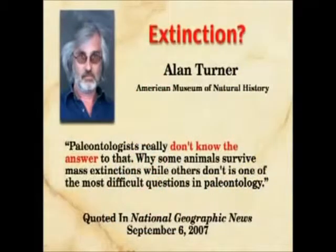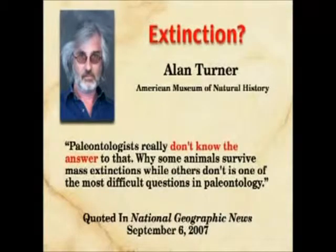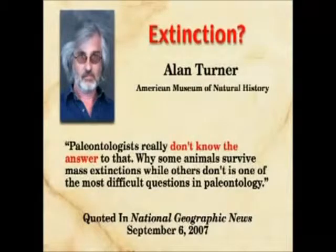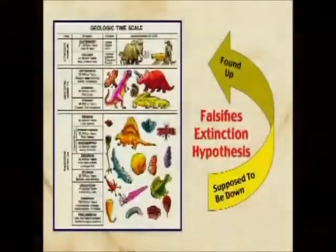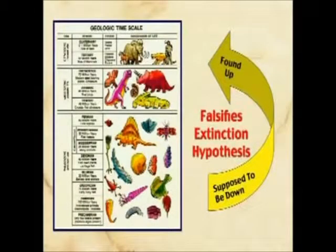Alan Turner refers to that, especially the implications regarding extinction — published just this September. Paleontologists really don't know the answer to that. This is pretty much up to date — September 6, 2007. Why some animals survive extinction and others don't is one of the most difficult questions in paleontology. Why you see something that's obviously extinct according to the column but swimming around — they don't know. It does falsify the idea that because you don't find it above a certain point, it's extinct. You have literally hundreds of examples of that.